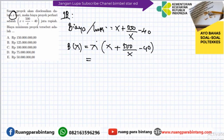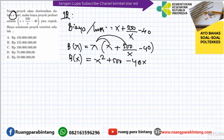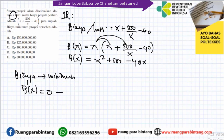Kita kalikan: x × x = x², ditambah 500, dikurang 40x. Itulah biaya B(x) dalam x hari. Supaya biayanya minimum, maka B'(x) = 0. Kalau kita turunkan: 2x + 0 - 40 = 0.